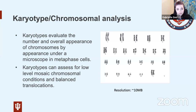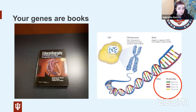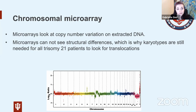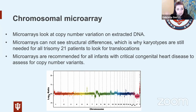Genes are like books, and chromosomal microarray looks at copy number variation on extracted DNA — looking for the missing or extra books — and can detect things like 22q deletion. It doesn't see structural differences because you're just looking at ratios of DNA. That's why in trisomy 21 we still need to complete karyotype or chromosomal analysis to ensure we're not dealing with a balanced translocation. Microarray is considered standard first-tier evaluation for infants with critical congenital heart disease.